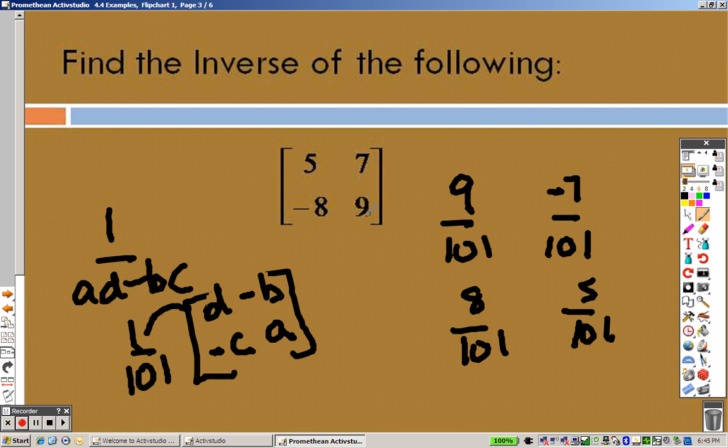So notice how D is 9, right? So that's why it's 9 over 101. Notice how that's a positive 7, so 7 over 101, but we made it negative because you make it negative. It should be a negative 8 over 101 when you multiply that through, but then it's a negative. So negative, negative 8 is positive, and then a 5 over 101. And that is your inverse. Why go through all that when you can just plug it in on your calculator? That's my point.